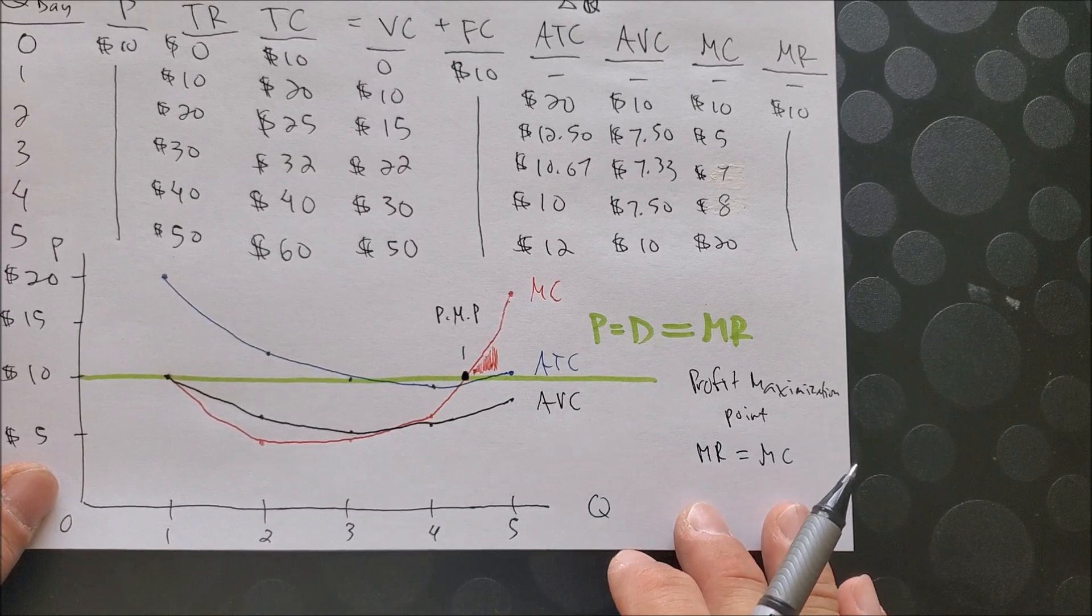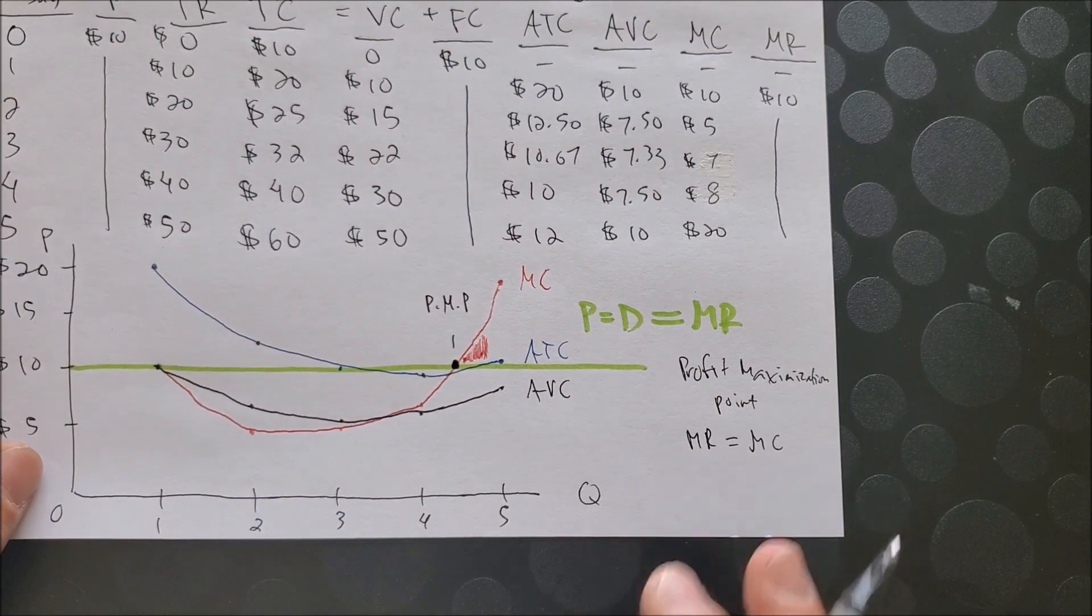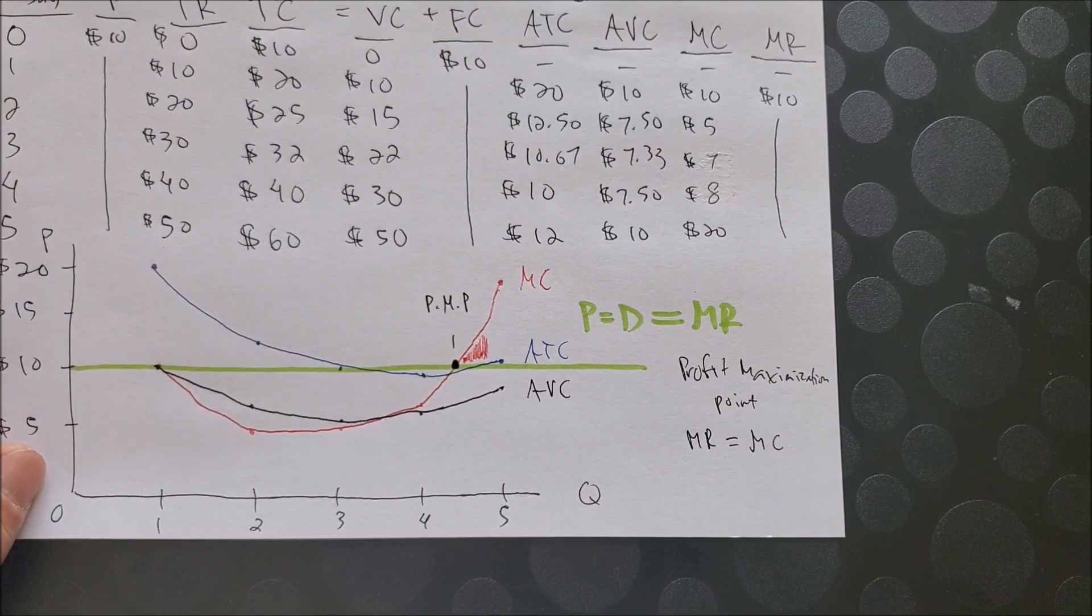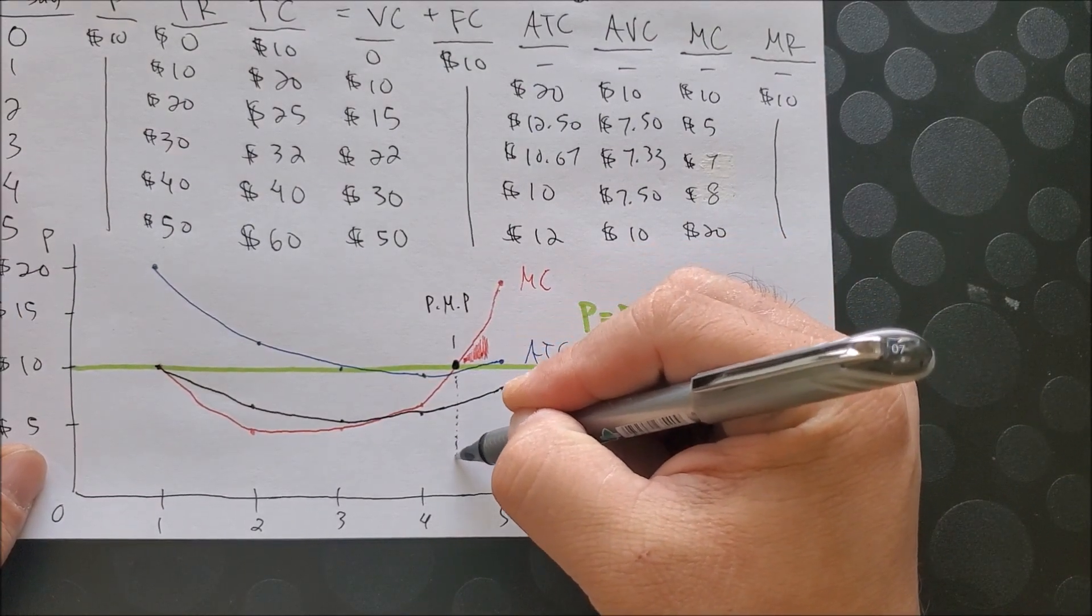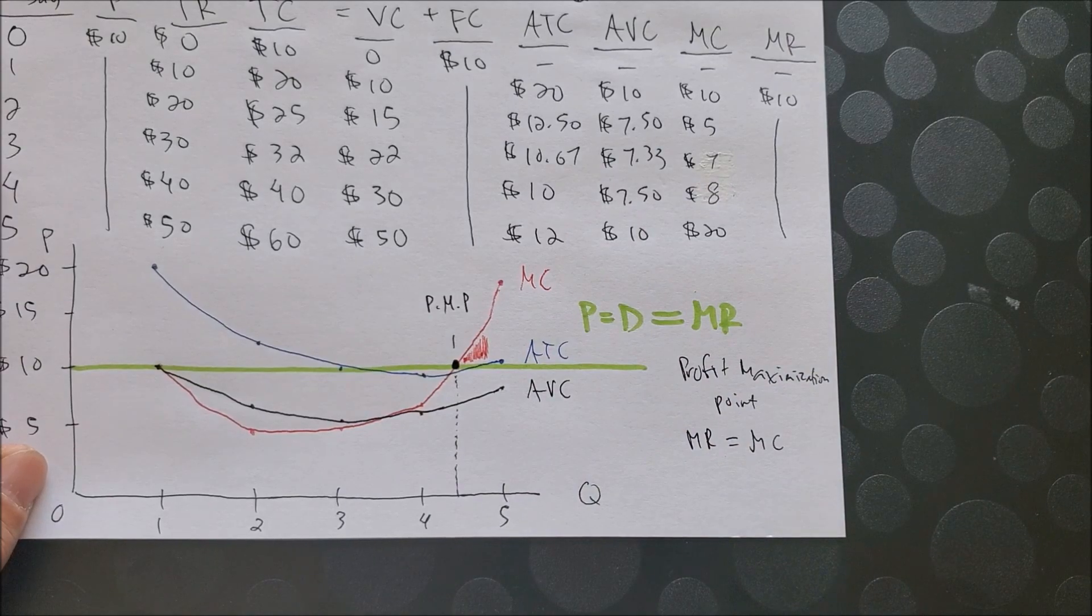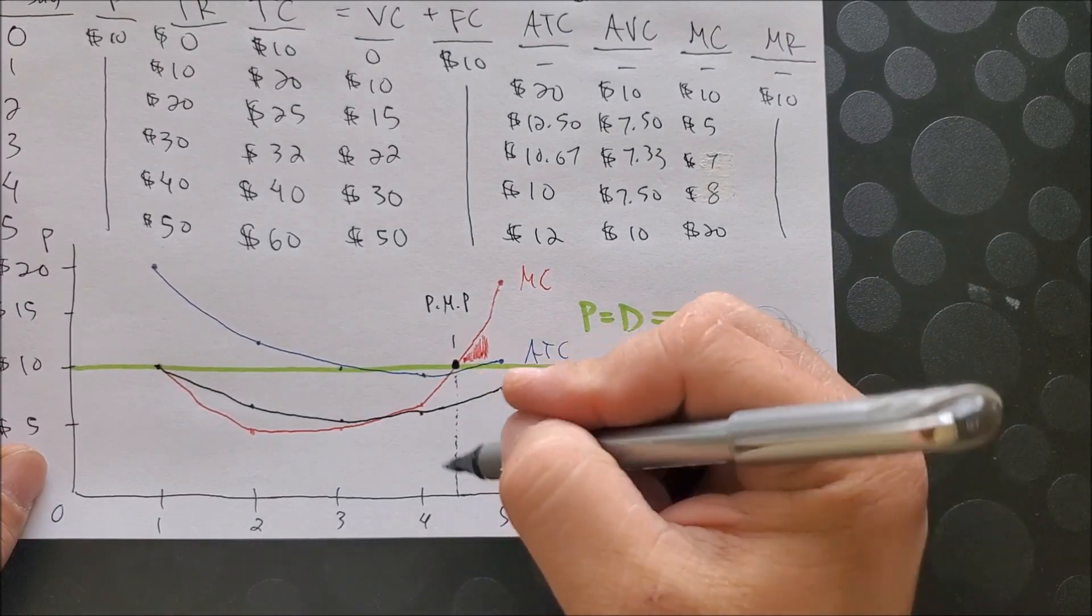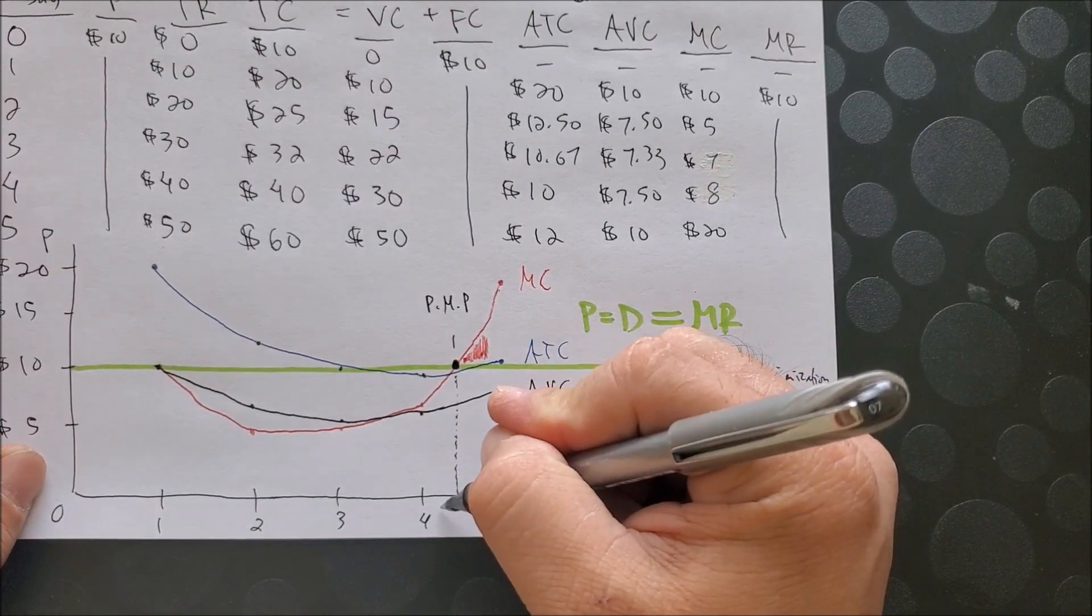So I want you to see where profit maximization point is located. And we can then go ahead and draw a dotted vertical line down to the x-axis. Now, it might sound silly that we are looking at maybe 4, I'll make it simple, 4.25.